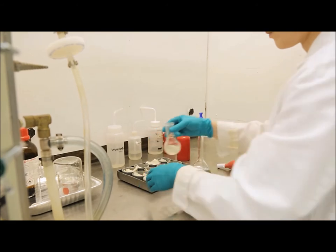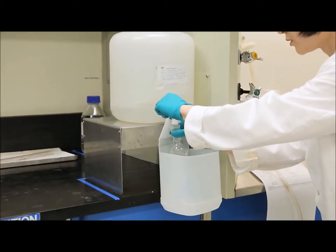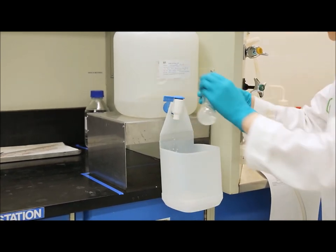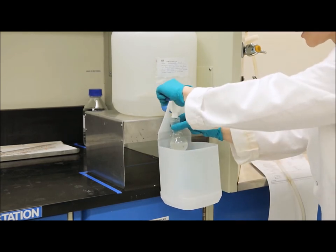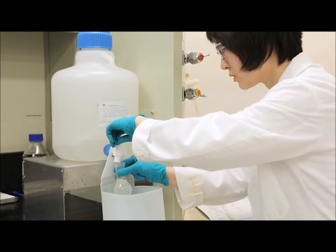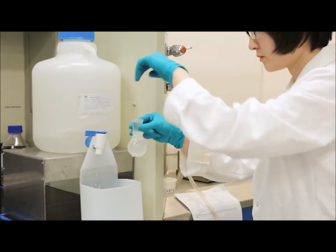Now that the internal standard has been added, next we're going to add our saturated sodium chloride solution. To begin, we fill the flask approximately half full, and we make sure to swirl the sample well. Once we have swirled the sample well, we can continue to add the saturated sodium chloride solution until it is almost full.